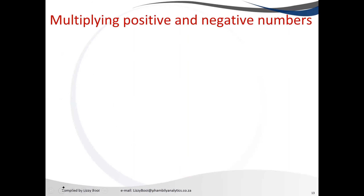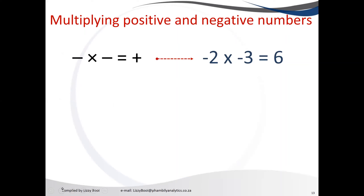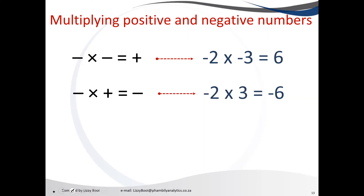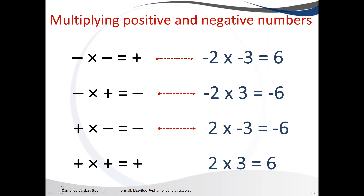Now, when working with the BODMAS rule, sometimes we have positive and negative integers. Remember the following: multiplying a negative integer by a negative integer gives you a positive — so minus 2 times minus 3 equals positive 6. Multiplying a negative by a positive gives you a negative — so minus 2 times positive 3 equals minus 6. Multiplying a positive by a positive always gives you a positive, so 2 times 3 equals 6.